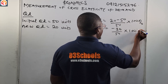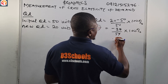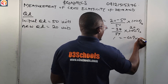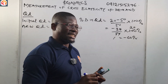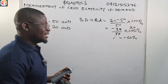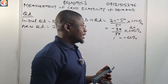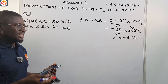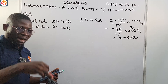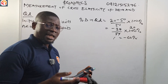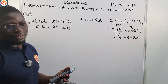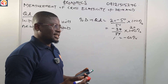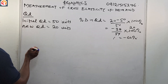Percentage change in quantity demanded = (20 − 50) / 50 × 100% = −30/50 × 100% = −60%. The negative sign indicates a fall — a decrease in demand for that commodity. There is no way someone has minus 60% quantity demanded without a fall in demand. That sign tells us whether there was a fall or a rise, depending on the context.